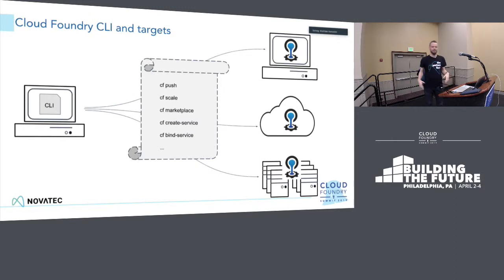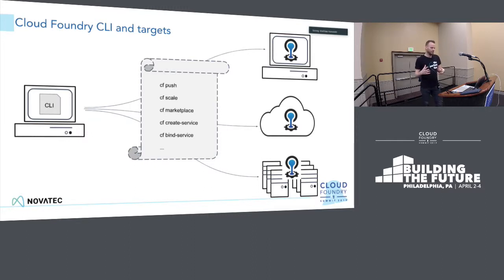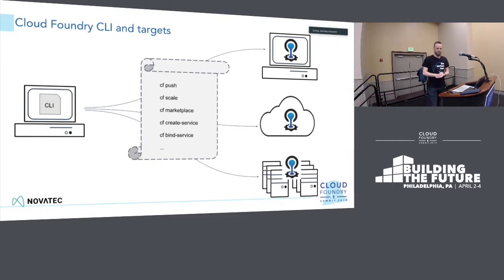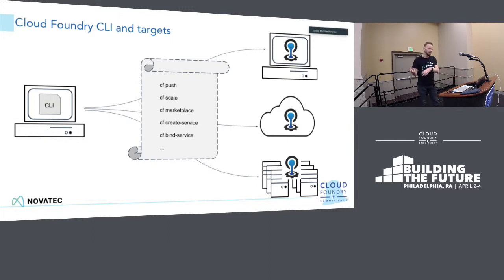That is the fundamental understanding I'd expect everybody to have to move forward. Then there is the Cloud Foundry command line interface — a generic API you can use across all the various Cloud Foundry environments. Whether you have a local Cloud Foundry installation for development, a public option, or a larger data center installation, the CLI will always be the same. There's a basic set of commands — pushing an application, scaling, listing options in the marketplace, and creating and binding services. It's pretty easy.